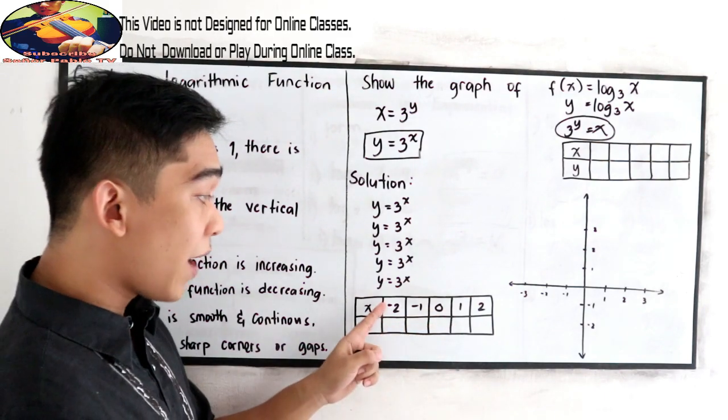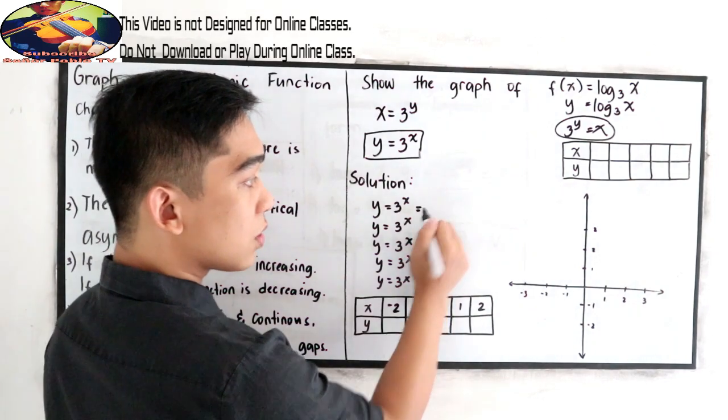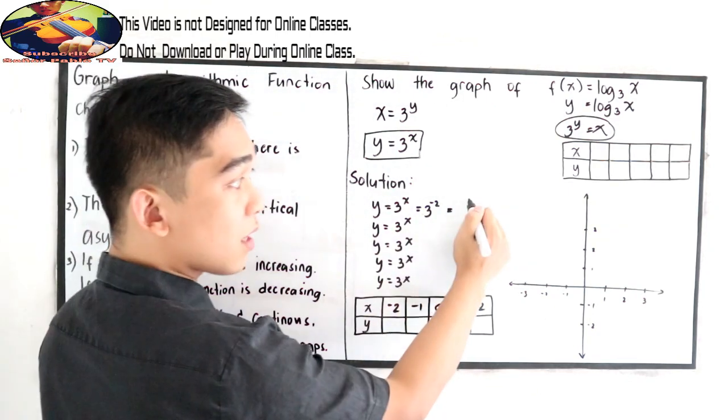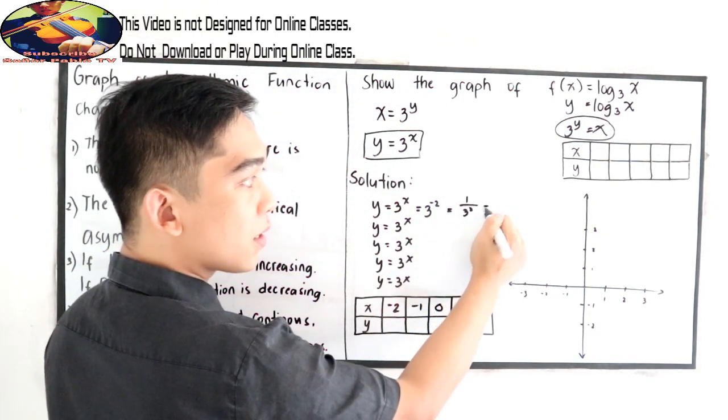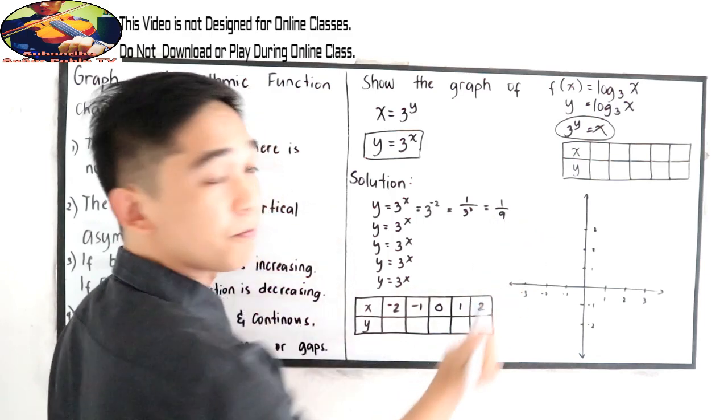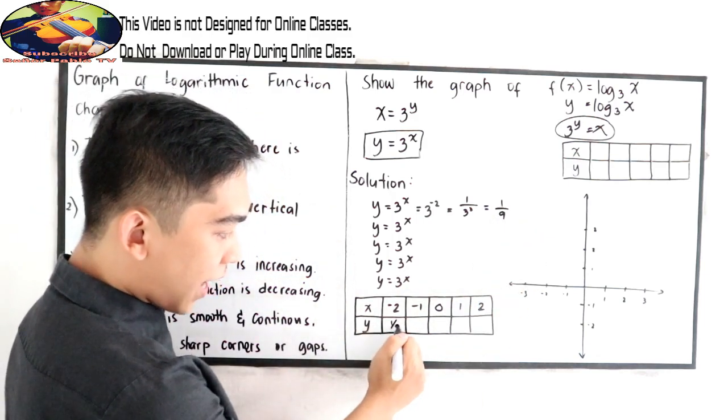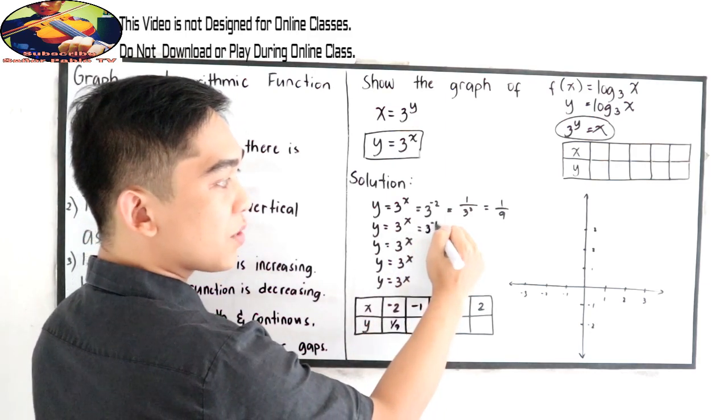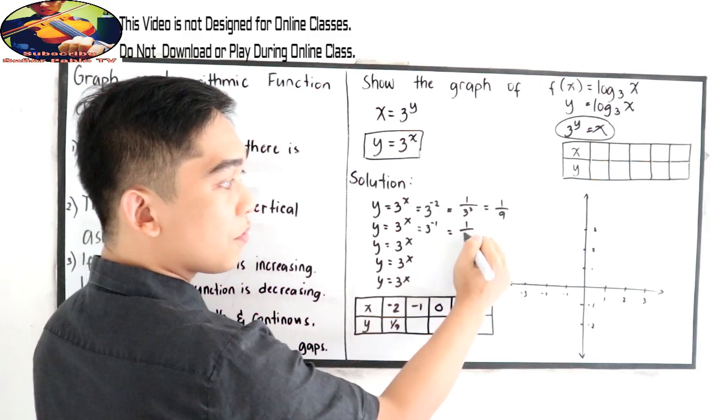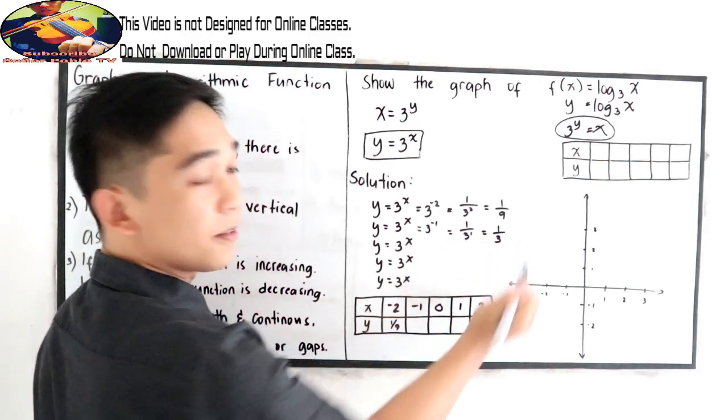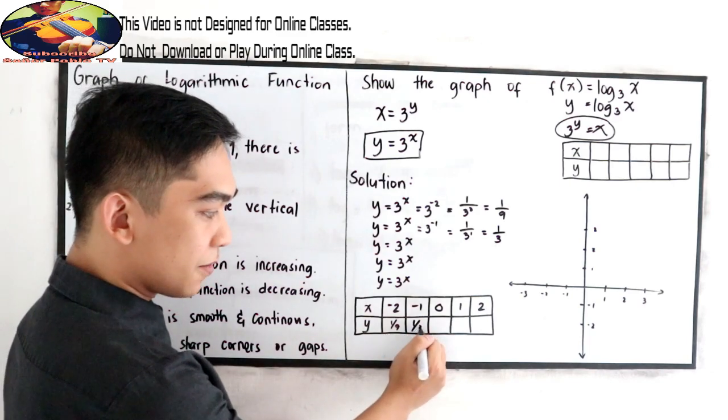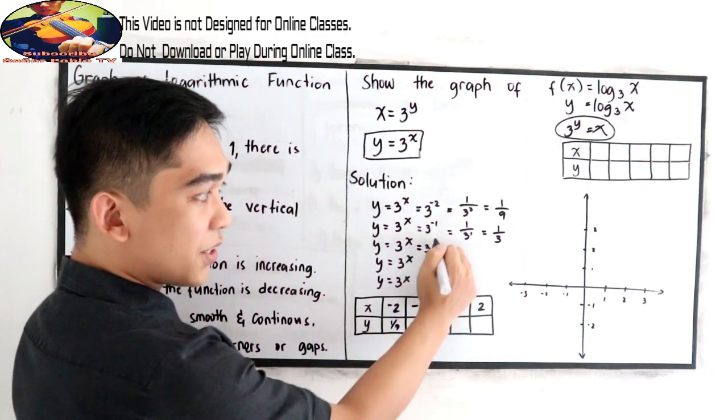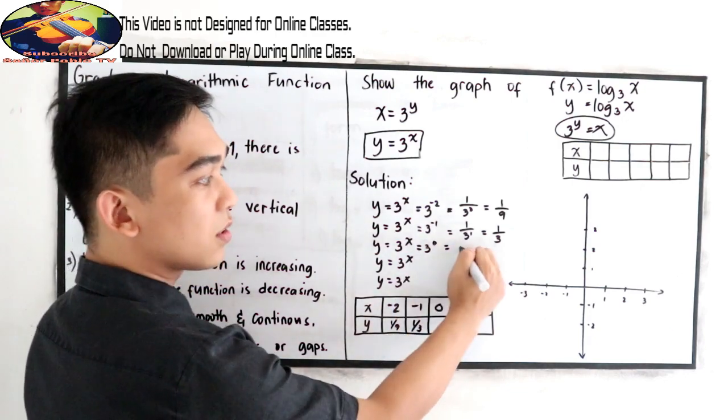Let us substitute. If x is negative 2, this will become 3 raised to negative 2. So this is 1 over 9. Next, if x is negative 1, 3 raised to negative 1, that is 1 over 3 raised to 1, that is 1 third. If x is 0, that will become 3 raised to 0, that is 1.